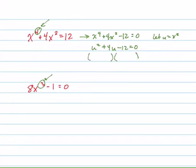So now to solve, I can factor, it's going to be u plus 6 times u minus 2 equals 0. That means u plus 6 equals 0, or u minus 2 equals 0. And that means u equals negative 6, or u equals positive 2.